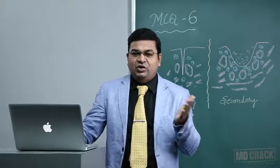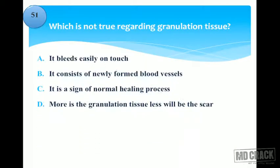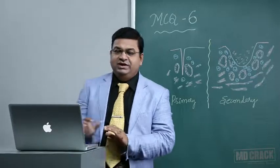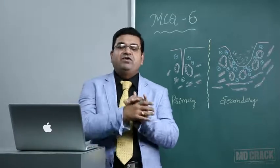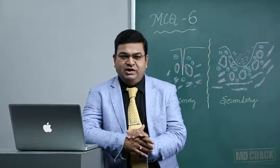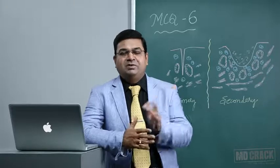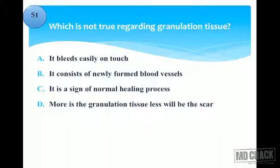Which of the following is NOT true regarding granulation tissue? Options: it bleeds on touch; it consists of newly formed blood vessels; it is a sign of normal healing process; more granulation tissue means less scar. Remember, granulation tissue consists predominantly of newly formed blood vessels. More granulation tissue actually means more scar, not less.